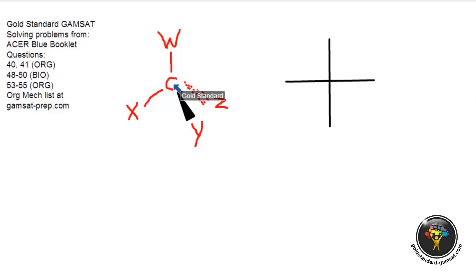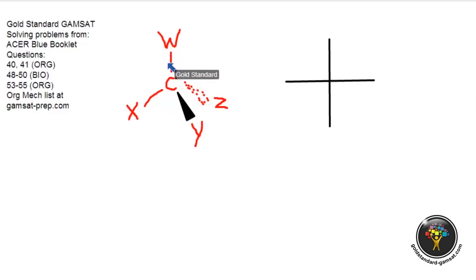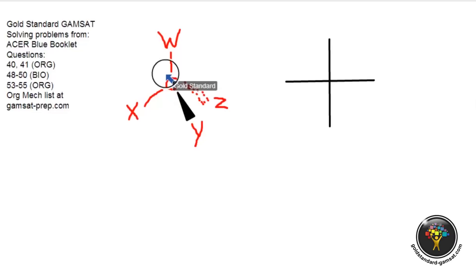A tetrahedron is a type of pyramid. Imagine the carbon at the center of the pyramid, with the top of the pyramid here, a triangle at the bottom with three points, and carbon in the center. The bond angle for a tetrahedral shape is 109.5 degrees. ACER may not ask you that number directly, but knowing it gives you an advantage when questions have some ambiguity. That is the standard tetrahedral angle.